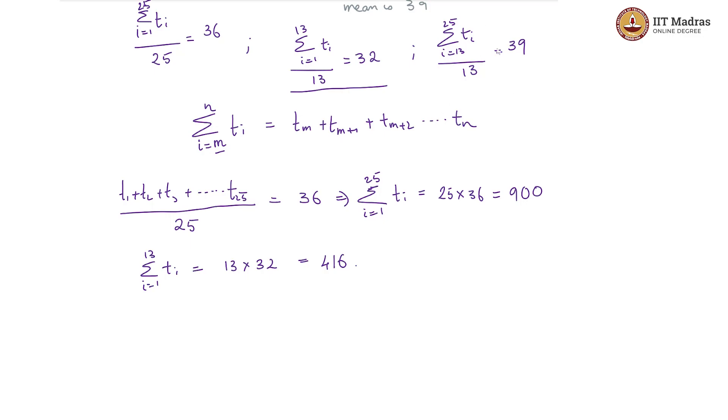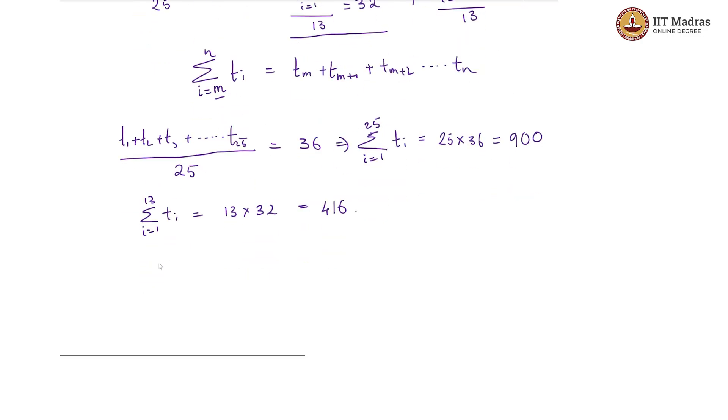And this portion, the last one, where sigma i goes from 13 to 25 t i is equal to 13 times, because at 13 observations overall into 39, this is the given mean, so this is essentially 507.